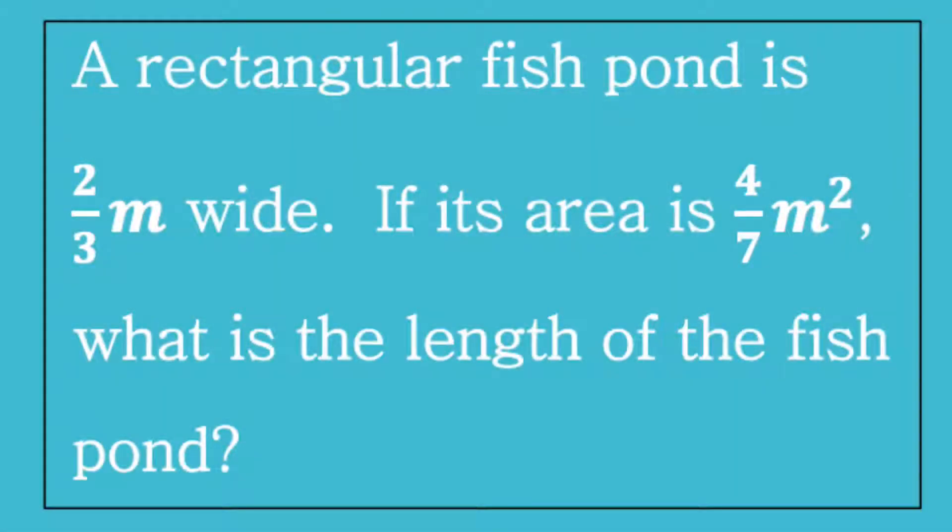A rectangular fish pond is two-thirds meters wide. If its area is four-sevenths meters squared, what is the length of the fish pond?